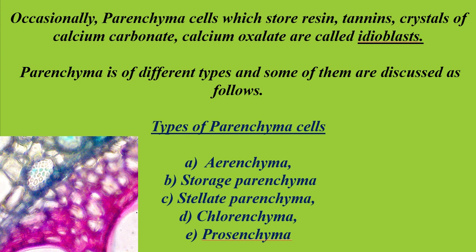In the picture you can find parenchyma cells which possess starch grains. Parenchyma cells are differentiated into five types: aerenchyma, storage parenchyma, stellate parenchyma, chlorenchyma, and prosenchyma.